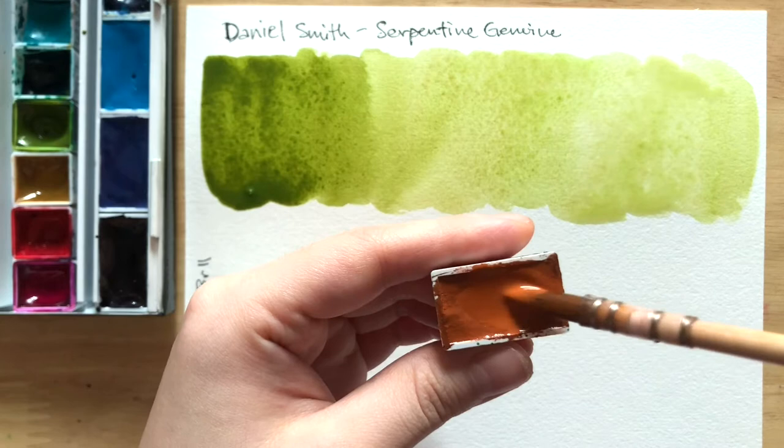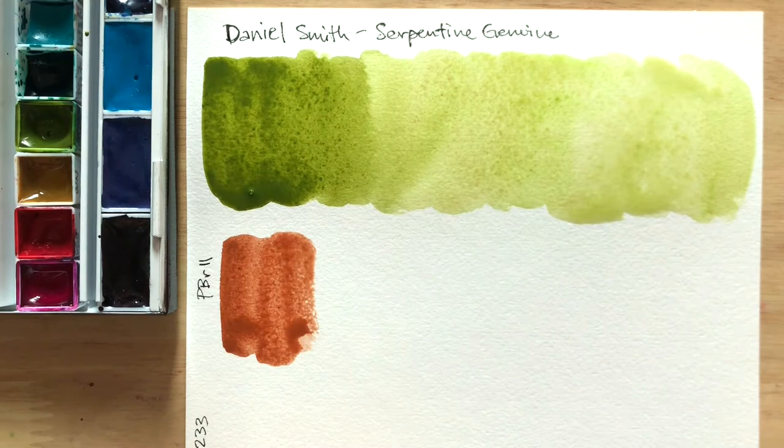Personally, I like using Serpentine Genuine as sap green in my palette. It's not too vibrant like most sap greens, and it's also not as muted as olive greens.